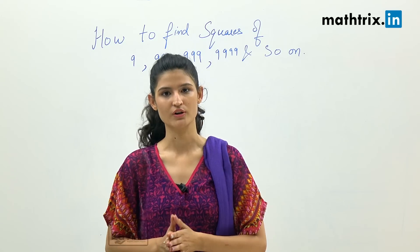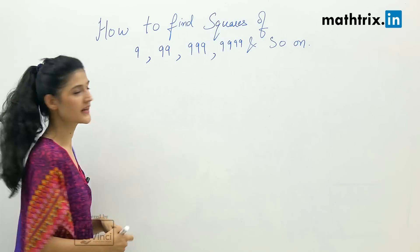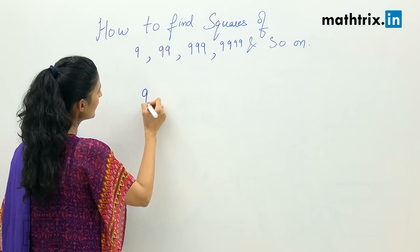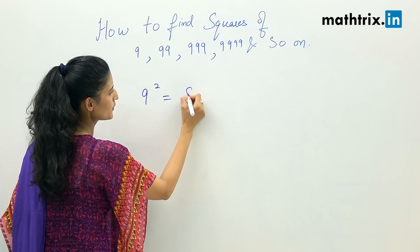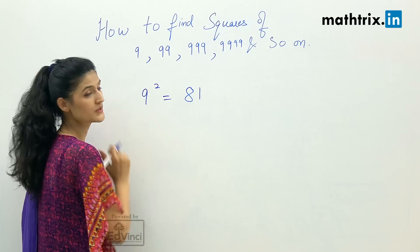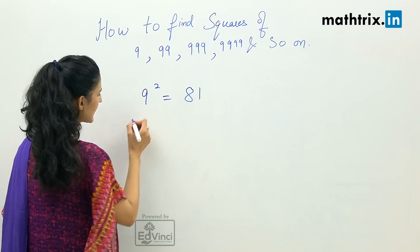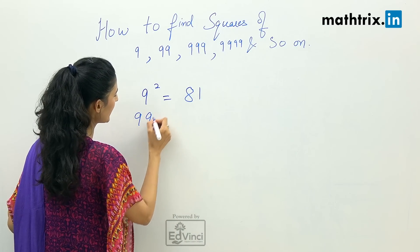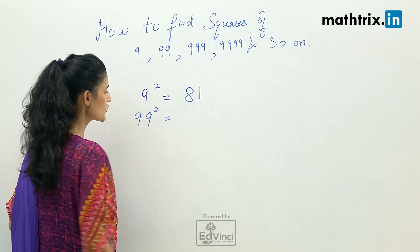Yes, you can find these squares in seconds. We all know that 9 square equals 81. Now let's take 99 square, so we'll follow very simple rules.